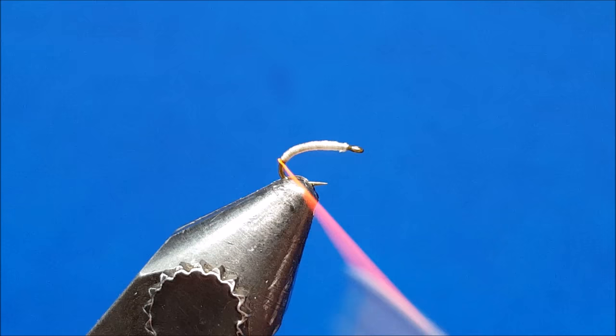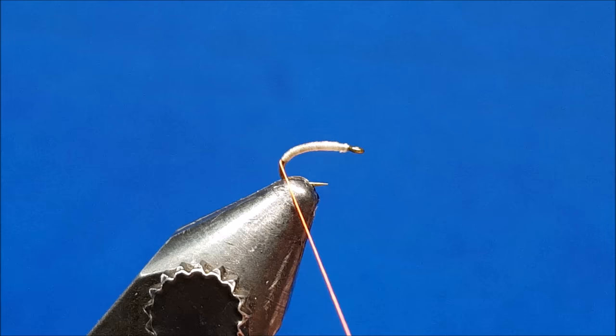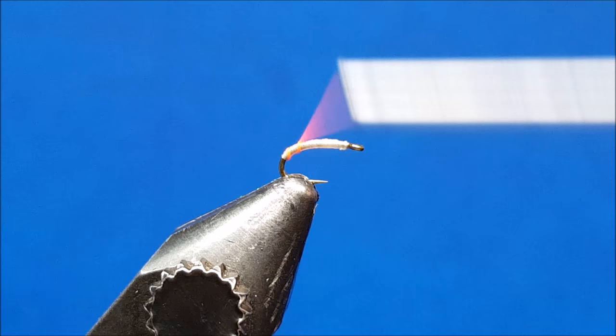Before bringing the 70 denier in orange forward, I'm going to give it a quick clockwise spin to tighten up that thread so that it doesn't flatten out as I rib. And I want to bring this forward with candy cane style stripes, leaving spaces in between.